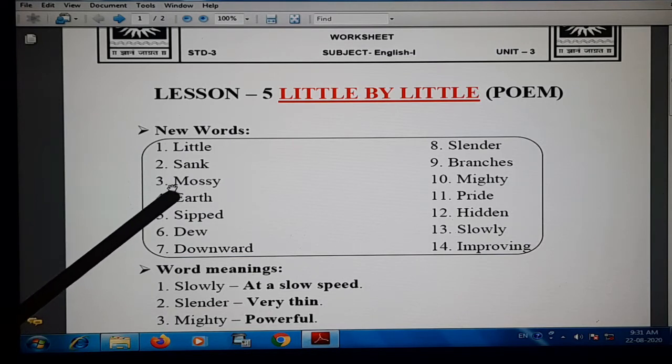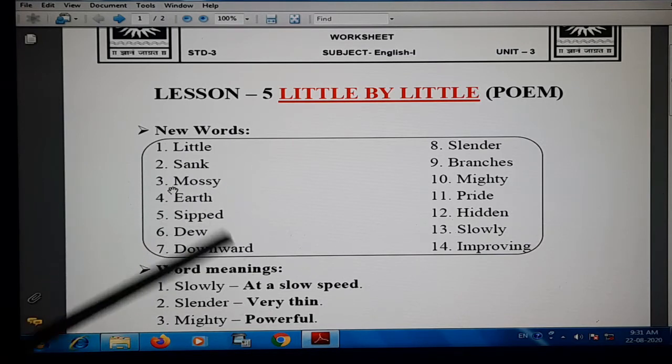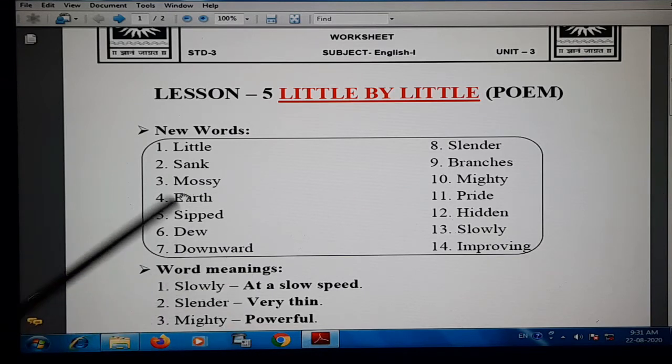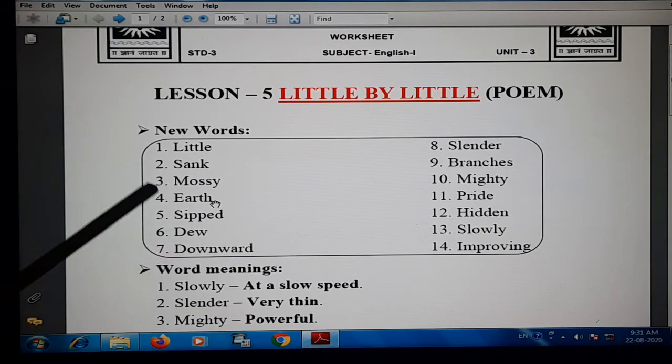Then number three, mossy. Mossy means land that is like moss, soft. Then number four, earth. Here earth means land, the ground where the seed goes inside.